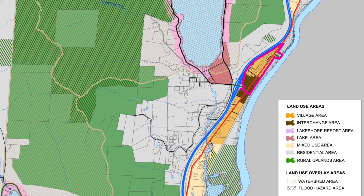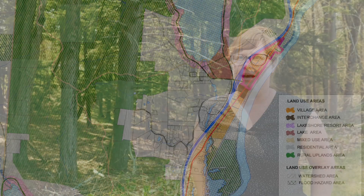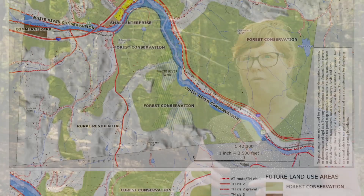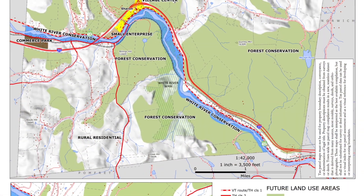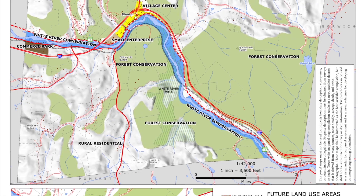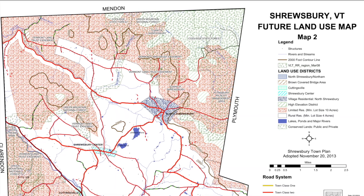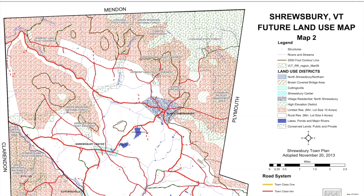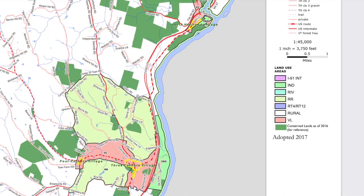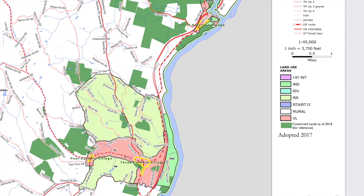We often recommend to towns to think about this map as a conceptual picture of what they want their future to be, so it's not necessarily a representation of what their town is today or what their zoning regulations specify. We ask towns to think about it as a vision for the future — identify general land use areas and their associated purposes as what you want them to be in the future.